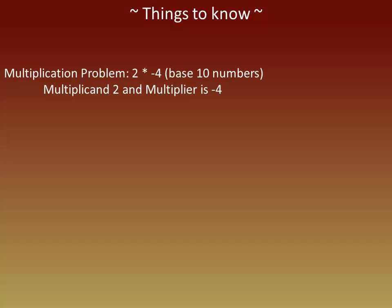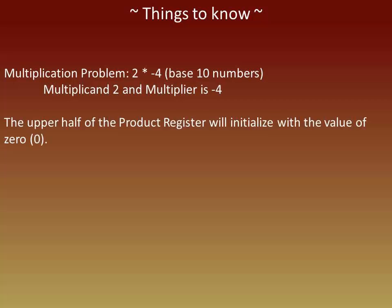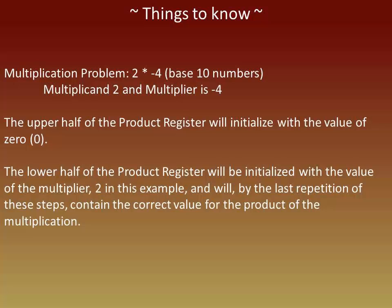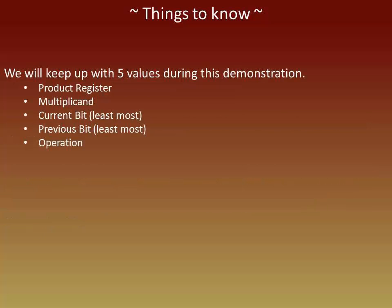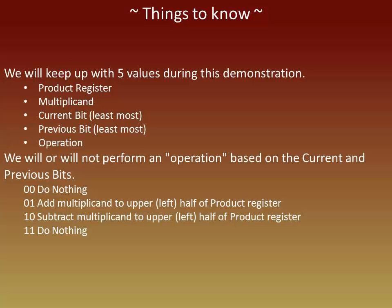There are a few things to be familiar with before we get started. In a multiplication problem there is a multiplicand and a multiplier. We are going to use the upper half of the product register to store a calculation, and the lower half to store the multiplier. By the last iteration it will contain the product of our multiplication problem. We will keep up with 5 values during this algorithm as well as the iteration completed: the product register, the multiplicand, the current bit, the previous bit, and the operation. Booth's algorithm uses the least significant bit of the current and previous product register to determine which operation to perform.